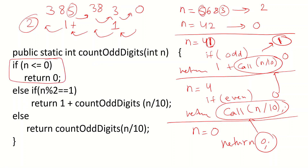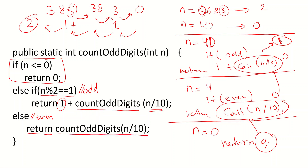The base case is: if n is zero, return 0. There are two general cases. If n % 2 == 1 (the number is odd), return 1 + countDigits(n/10) — this counts the digit and continues. If it's even, do not add one; just return countDigits(n/10) — this continues without counting. Adding plus one in the even branch would make it count all digits just like the previous version. Always remember to include the return keyword, since we are returning a number each time.